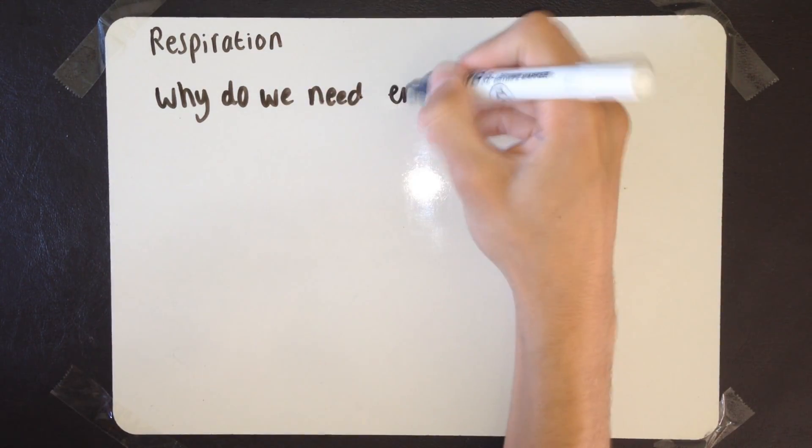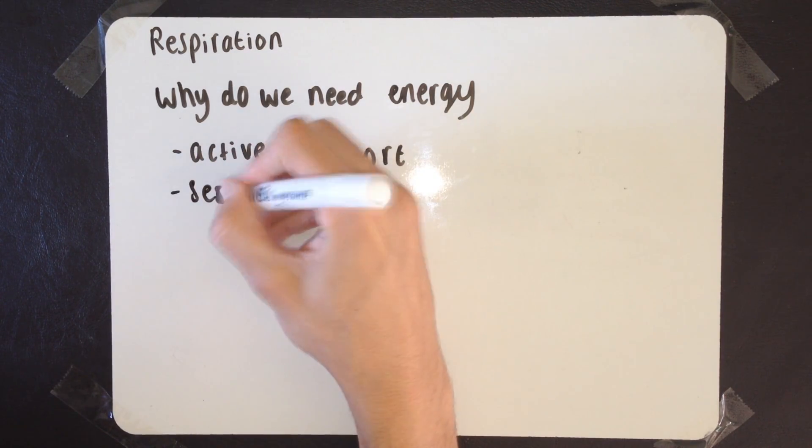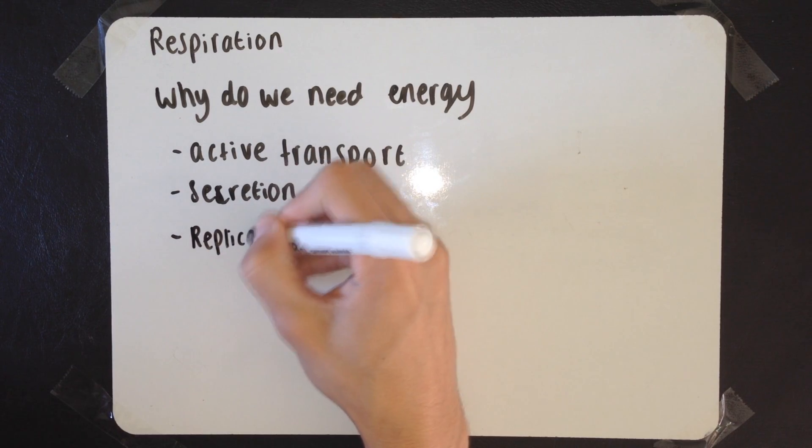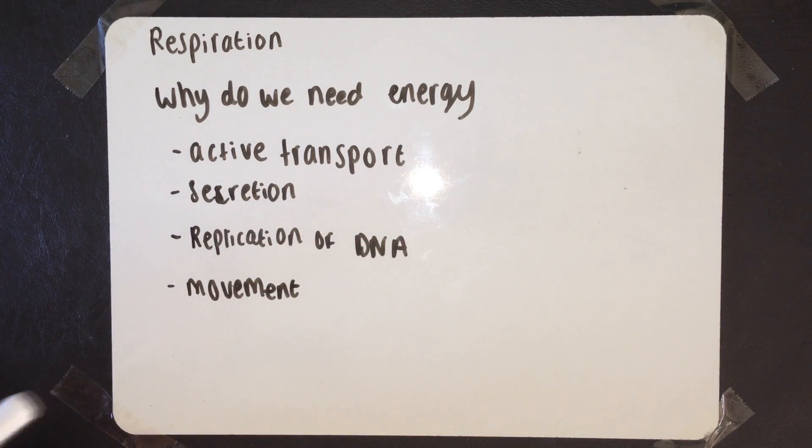So why do we need ATP in energy? Energy is used for active transport of molecules, secretion of molecules, endocytosis in and out of cells, replication of DNA, and the movement in the cilia, or be it the muscles themselves.